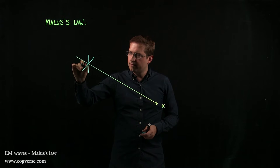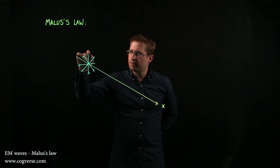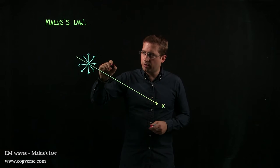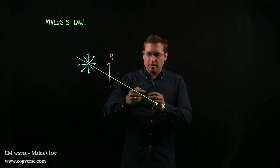First, let's take unpolarized light and let's say that it propagates in the positive x direction. Let's say also that we have a polarizer P1, which is vertical.